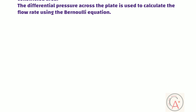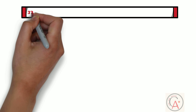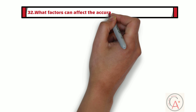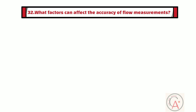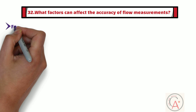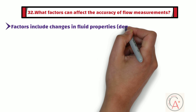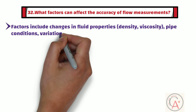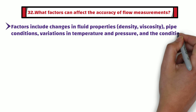The 32nd question is: what factors can affect the accuracy of flow measurements? Factors include changes in fluid properties such as density and viscosity, pipe conditions, variations in temperature and pressure, and the condition of the flow measurement device.